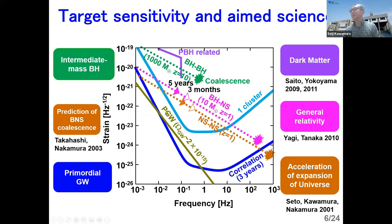And this graph shows the target sensitivity of DECIGO and aimed science. First, this is frequency and strain. And this curve is the target sensitivity of one cluster of DECIGO. And this one is target sensitivity with a correlation for three years. First, here, you can see that this is predicted gravitational wave signals coming from black hole-black hole binary coalescence, with 10 to the 3 solar mass at z=0.1. So we have a very good signal-to-noise ratio. And we have good statistics about the intermediate mass black hole. And also, here, you can see that the neutron star-neutron star coalescence at z=0.1, we have a pretty good signal-to-noise ratio.